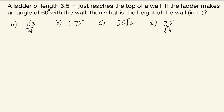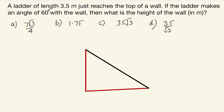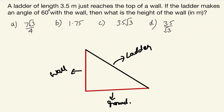Let's draw the diagram. We have a ladder of length 3.5 meters just reaching the top of the wall. Here is the wall, here is the ladder leaning against the wall, and this is the ground. First, read the question correctly.